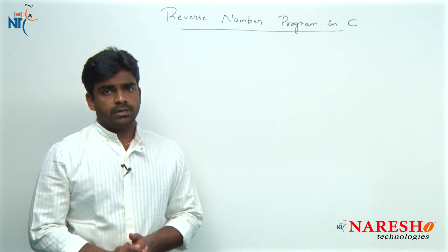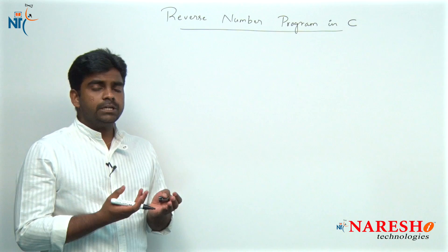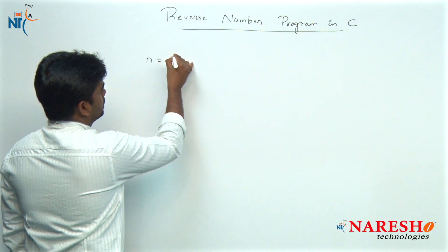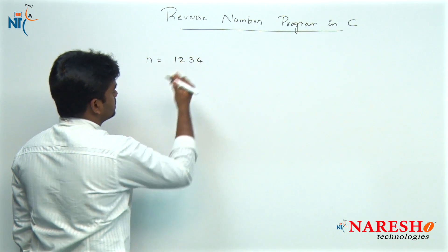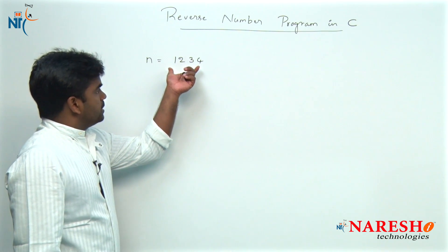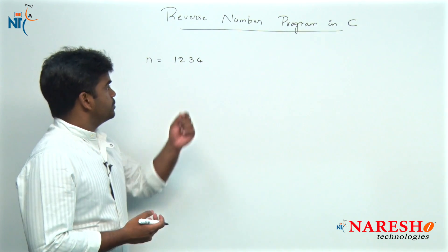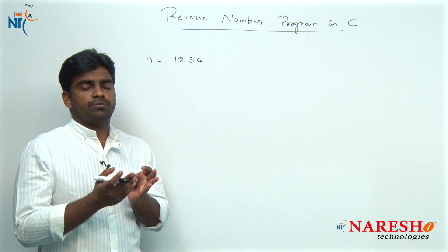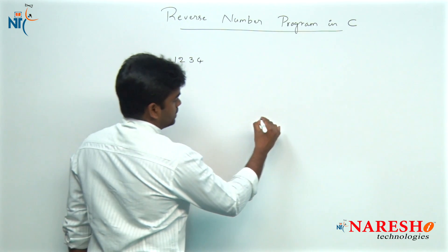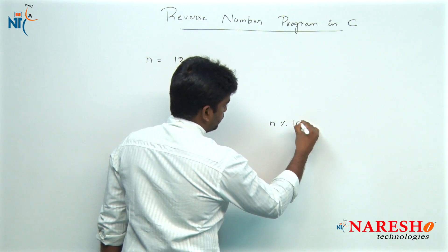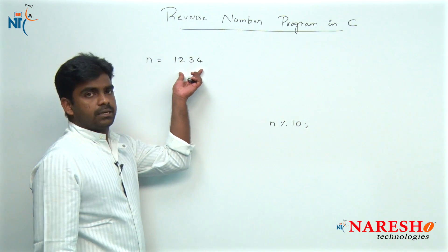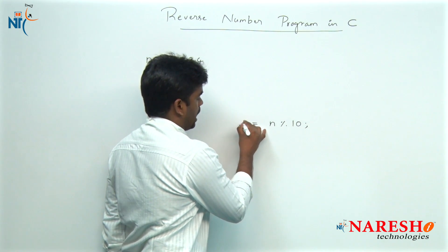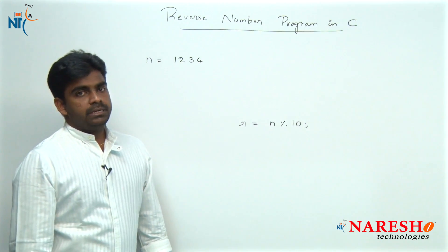We are going to discuss the logic. First of all we need to read the N value. Suppose N value is 1234. To get individual digits, we need to perform a mod operation with 10. So N mod 10 — whenever you divide 1234 by 10, the remainder is 4. That 4 will be stored into R.